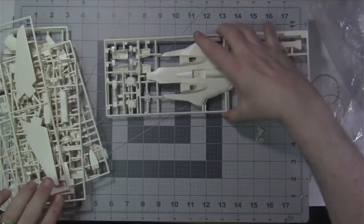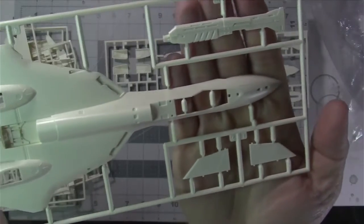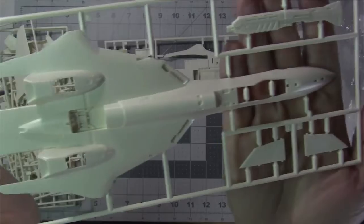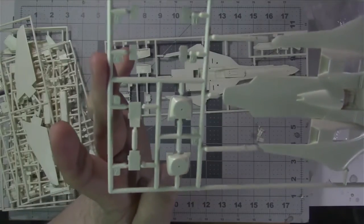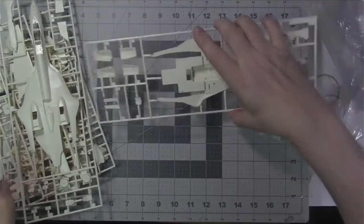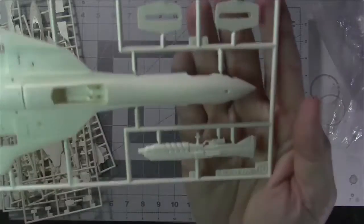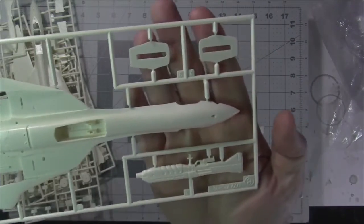And then we have the top and bottom fuselage. As you can see, she's rather a long aircraft. Very big. And remember, this is 1:72nd scale. So that looks good. And then the underside here. Again, nice recessed panel lines with the one half of the gun pod.